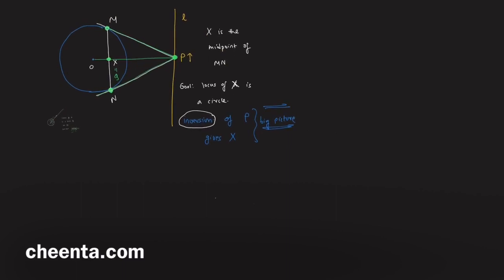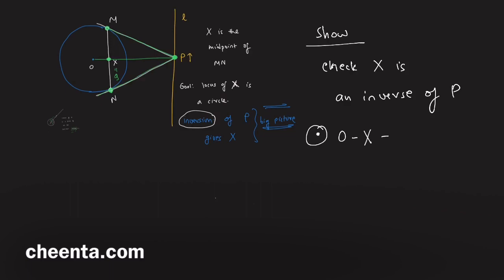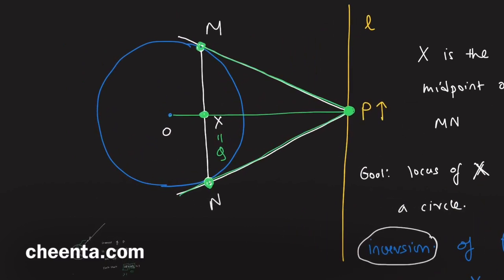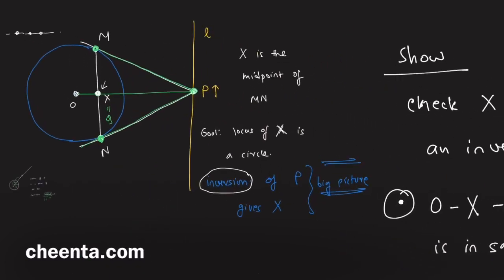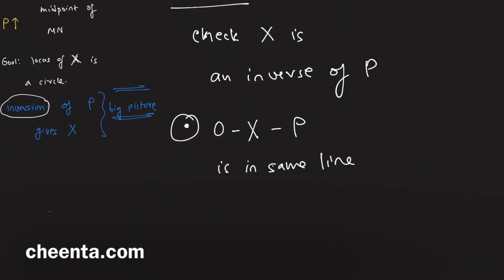To check that X is the inverse of P, we need to verify two things: first, that O, X, and P lie on the same straight line; and second, that OX times OP equals 1. Note that none of this is strictly required to show the locus of X is a circle, but we want to understand the inversion.